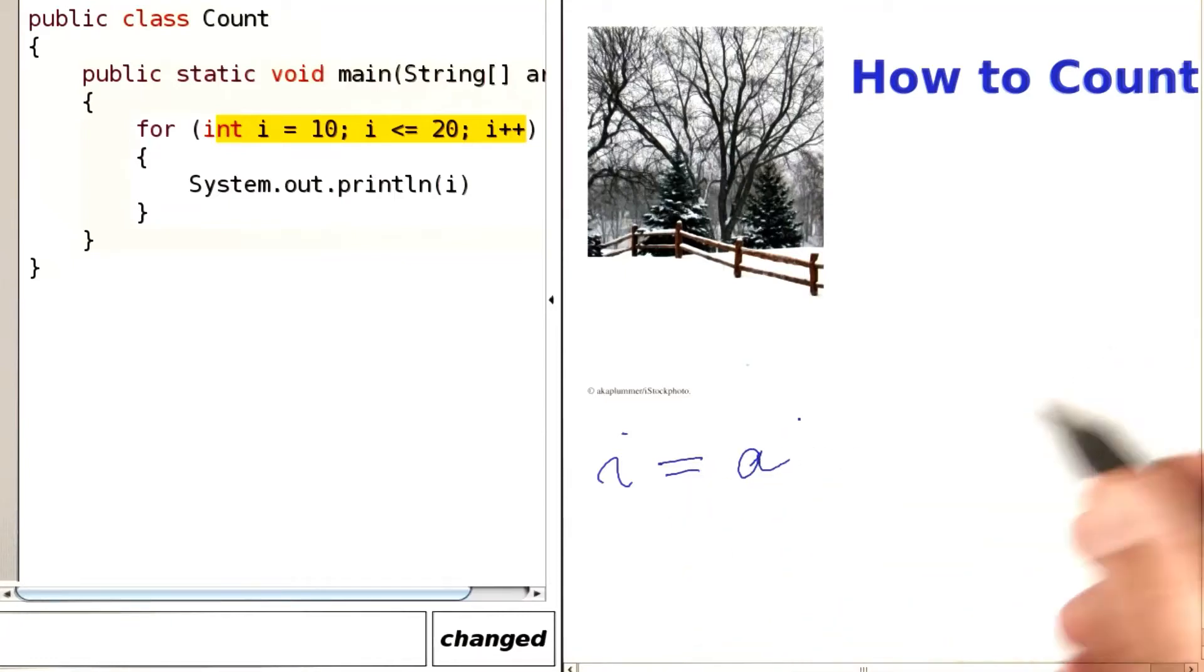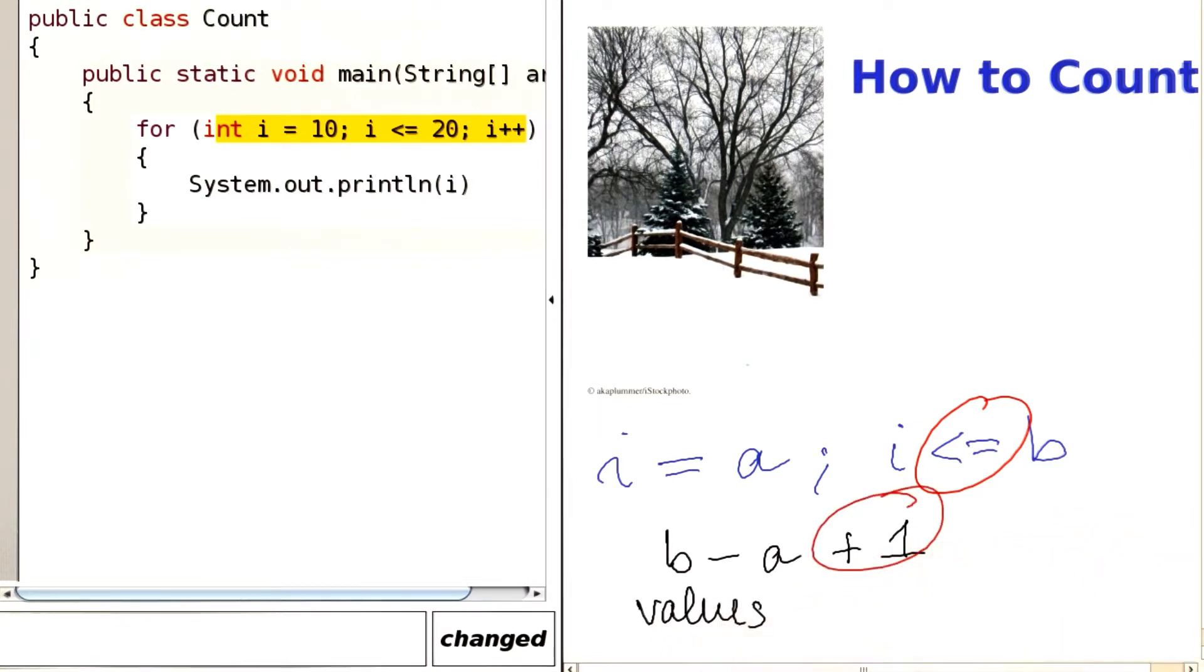When i starts at some value A and then it goes up to B, including B with a less than or equal sign here, then there are B minus A plus one values. That plus one is the fence post plus one.